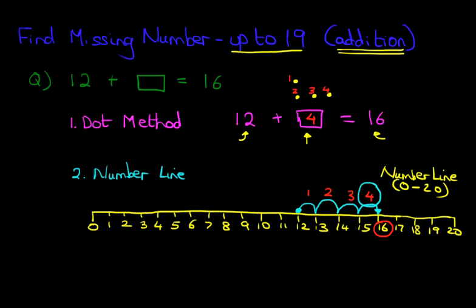Now notice that the dot method we got to the answer four and the number line we got to the answer four. Two different methods, same result.